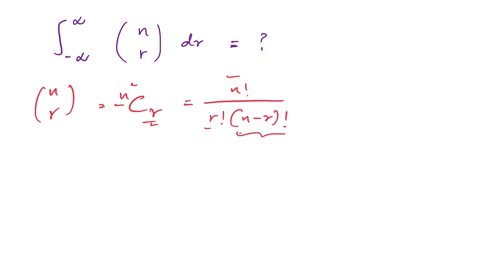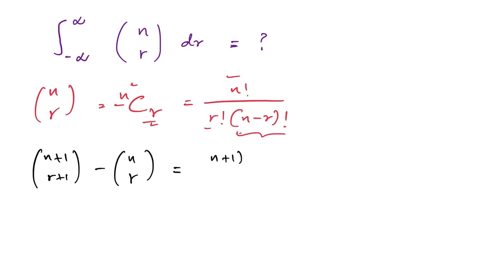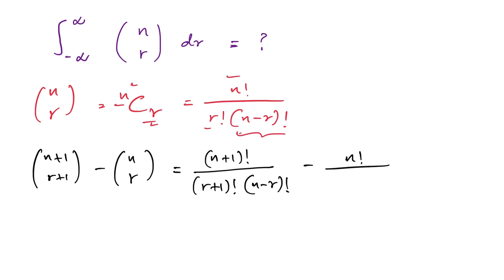Now, n+1 choose r+1 minus n choose r. We are going to simplify this. We have (n+1)! over (r+1)! times (n-r)! minus n! over r! times (n-r)!.